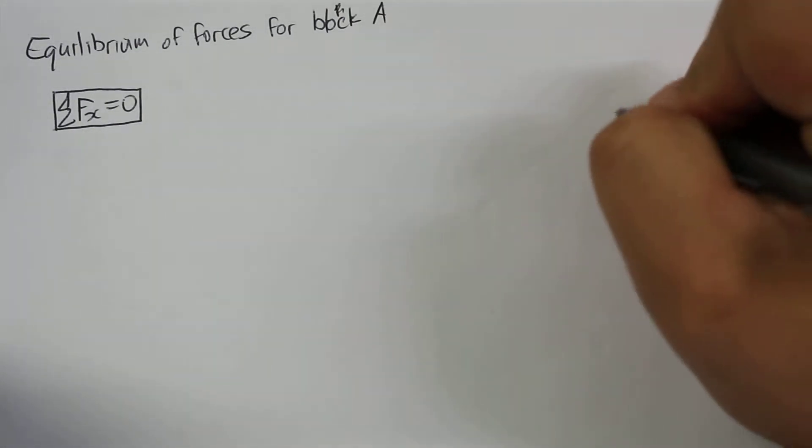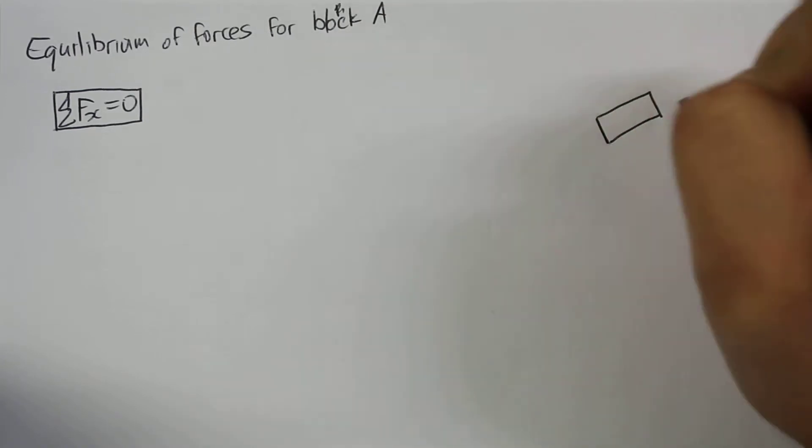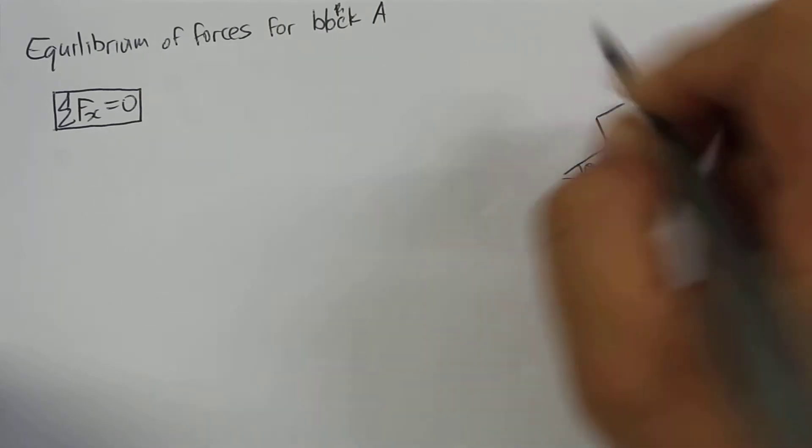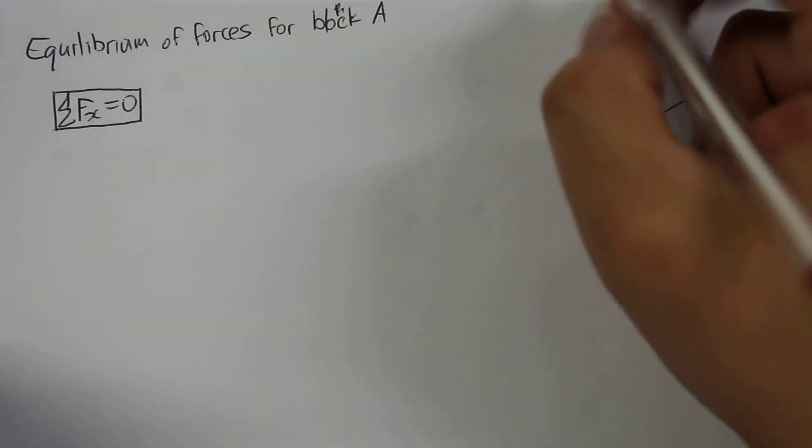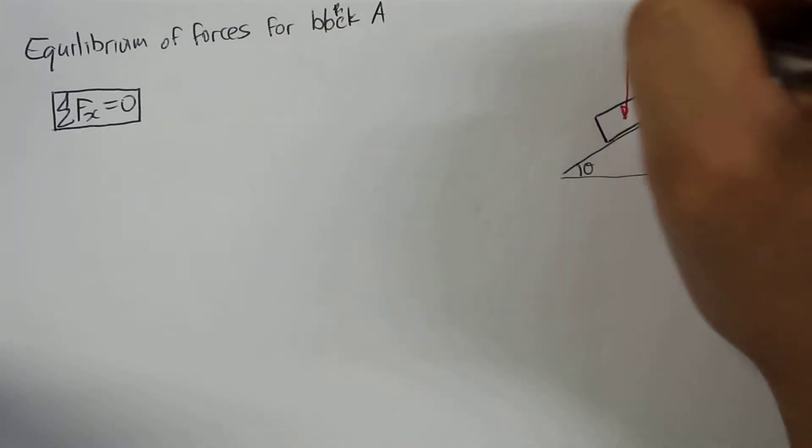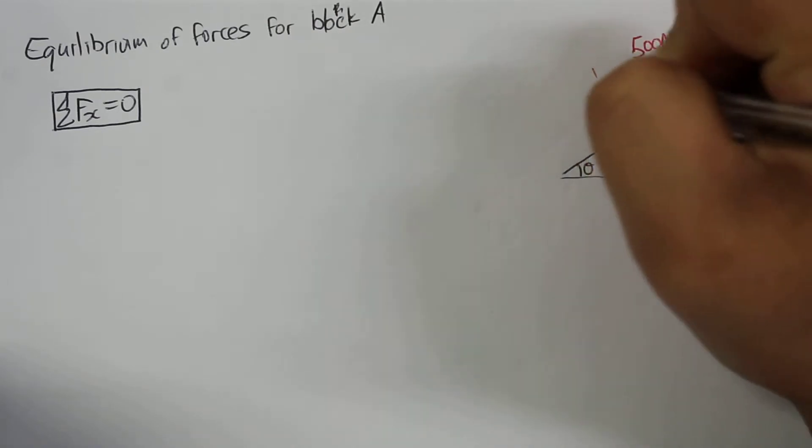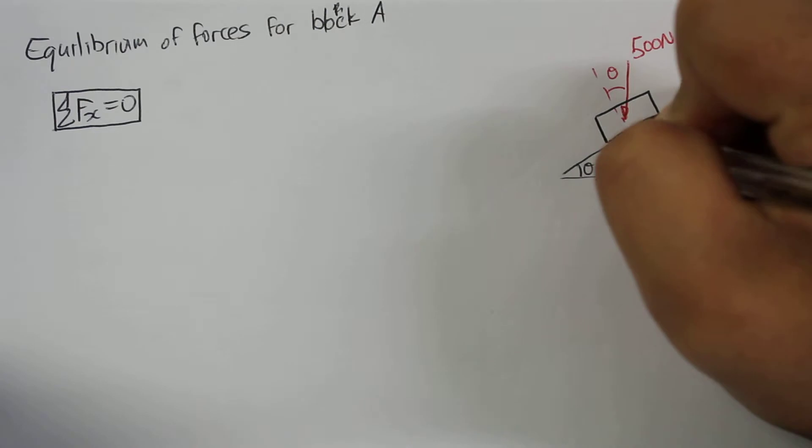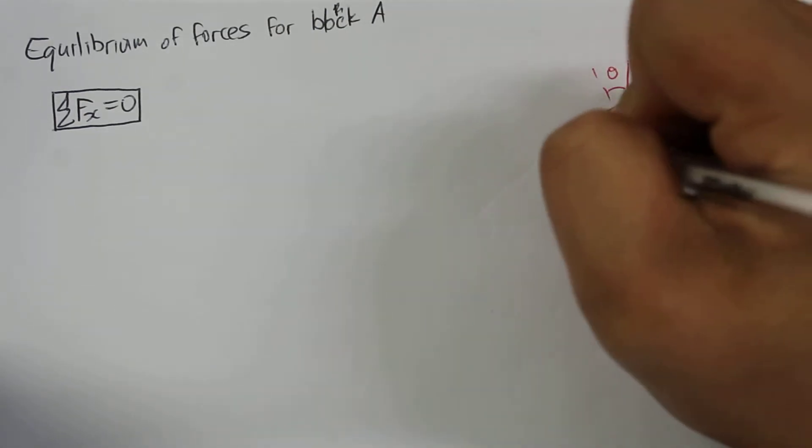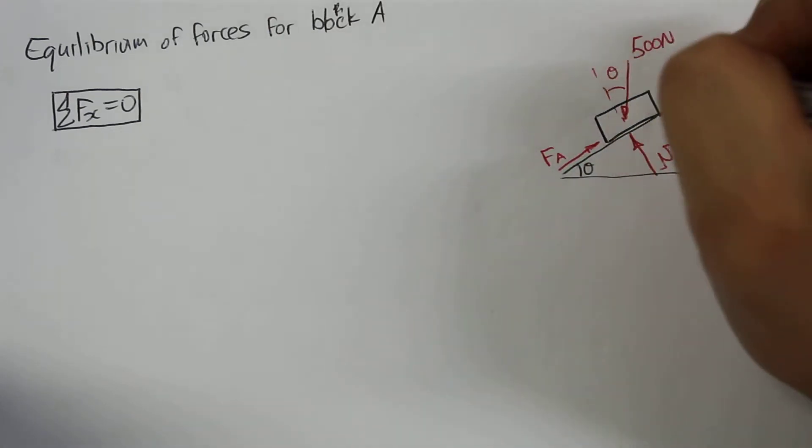I'm going to redraw block A's free body diagram just so that you can see what's going on with it. So here's our angle theta, our weight force which is acting down on an angle theta, our normal force, our friction force, and the tension force as well.